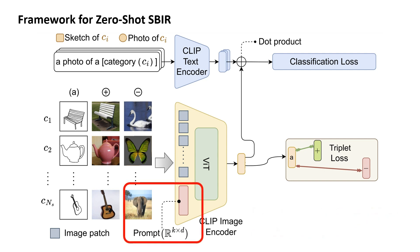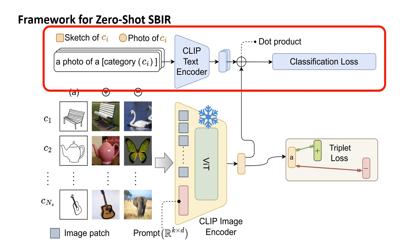We thus opt for learning two sets of visual prompts — one for sketch and the other for image. These are fed along with patch tokens to CLIP's ViT image encoder. Knowledge learned by CLIP is distilled into the prompt weights, keeping encoder weights frozen except for the trainable parameters of every layer normalization layer. We further exploit the high generalization ability provided by natural language through CLIP's text encoder over a classification loss on the sketch-photo joint embedding space. Following recent literature, the text prompt is handcrafted as shown.